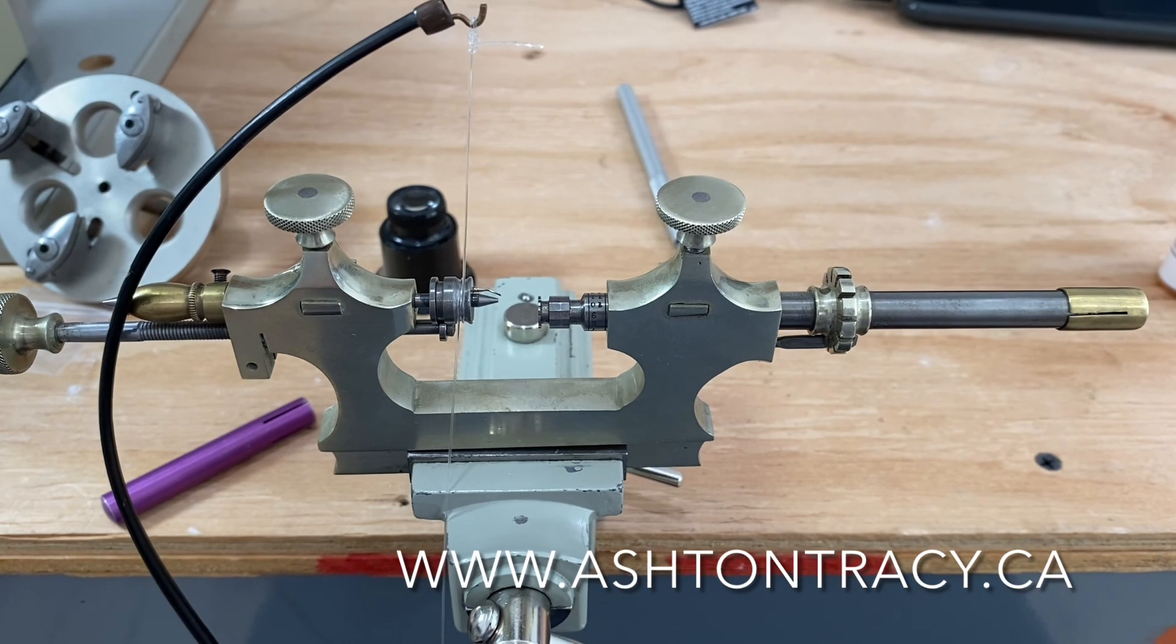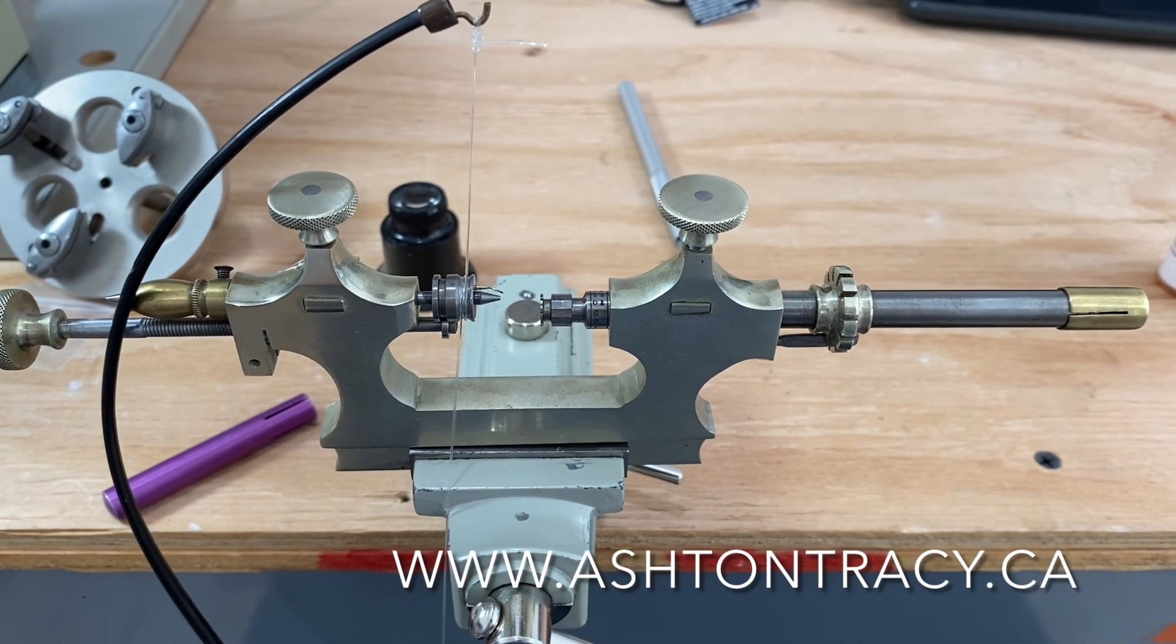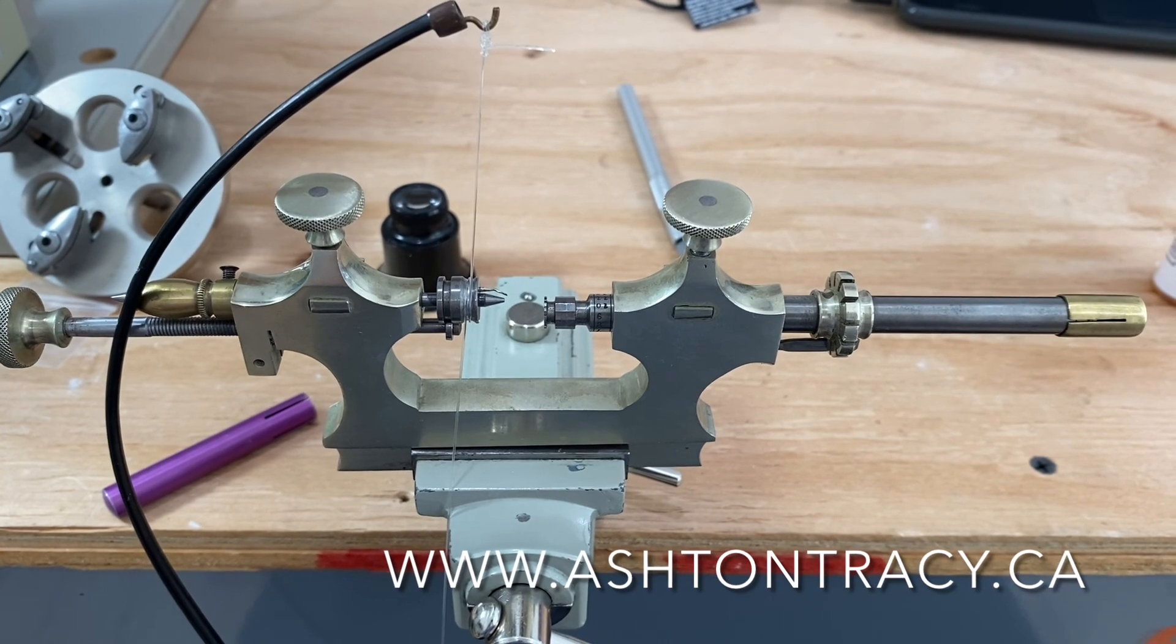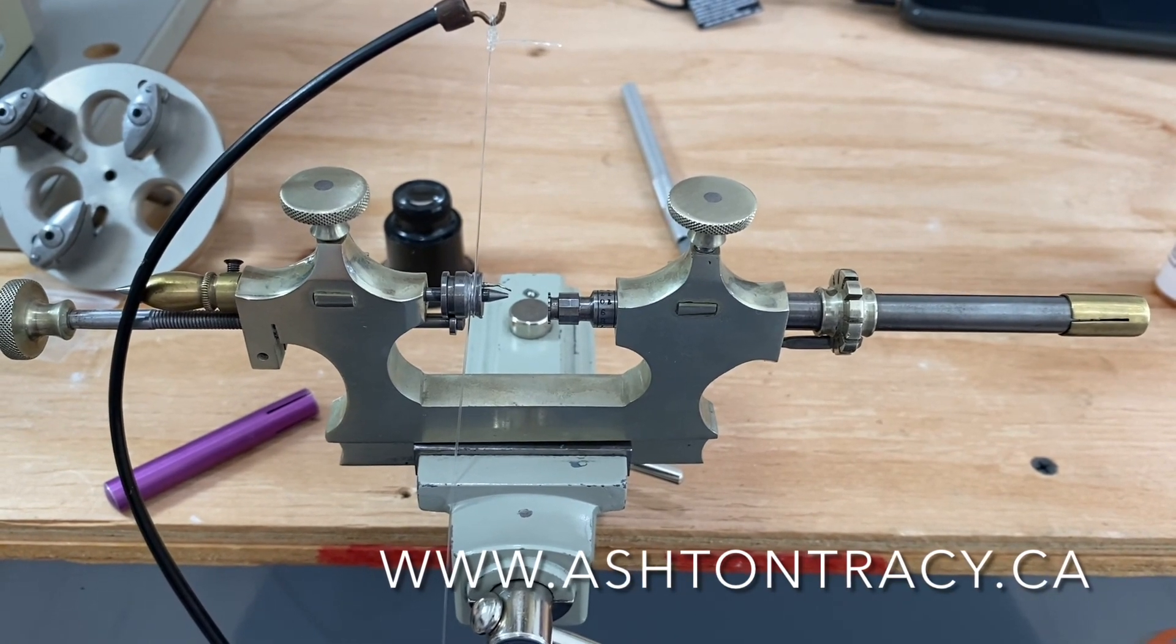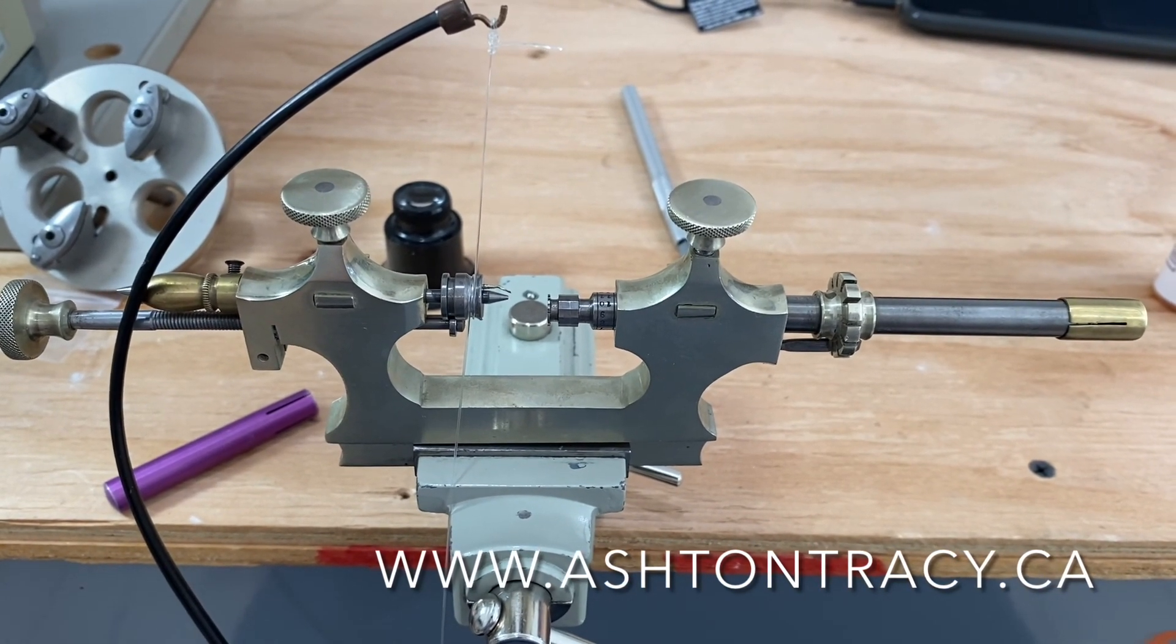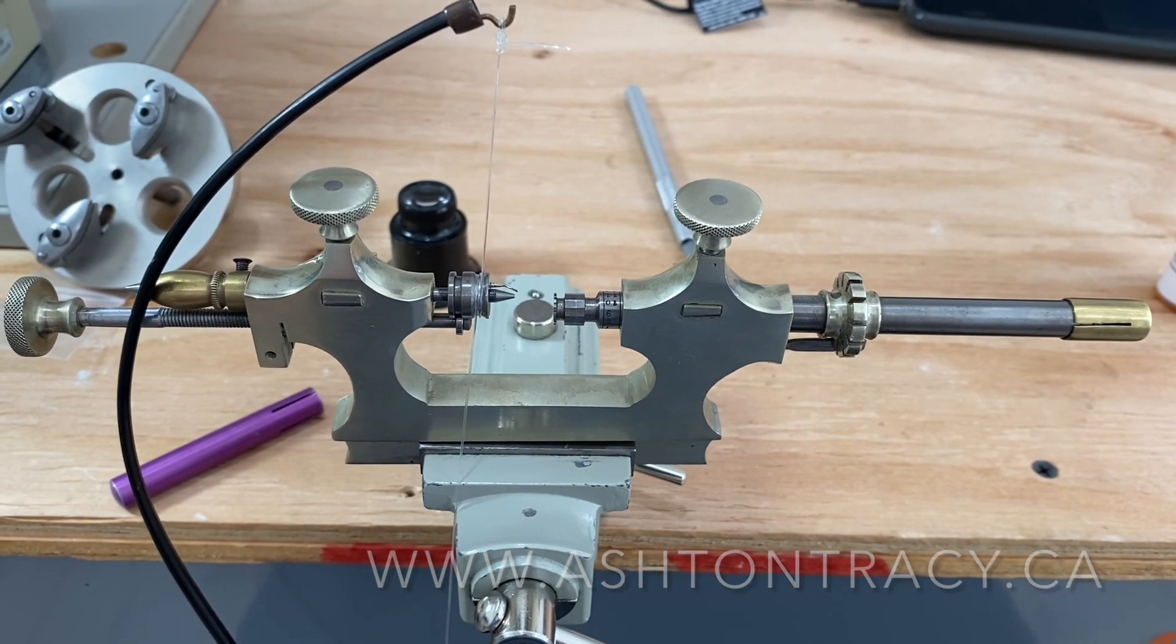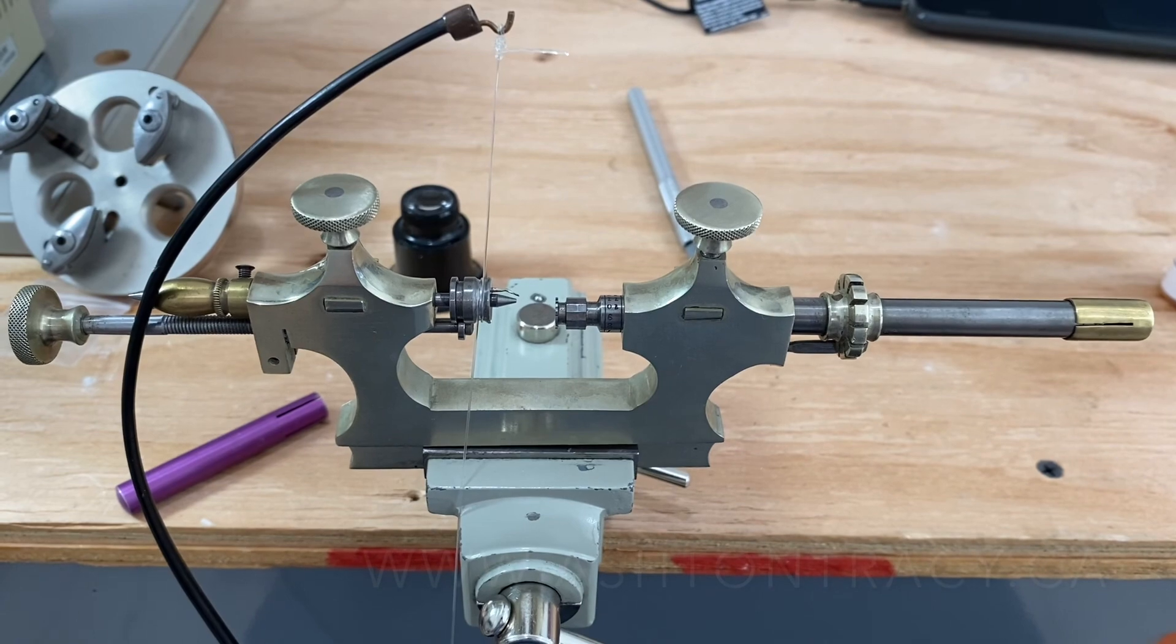And there we have it. That's how we use our Jacko tool and successfully burnish and polish train wheel pivots. Stay tuned for the next video in this series. Thanks for joining me today. Don't forget to subscribe to be notified about the next video. Feel free to leave a comment and share with friends. Thanks again and see you next time.